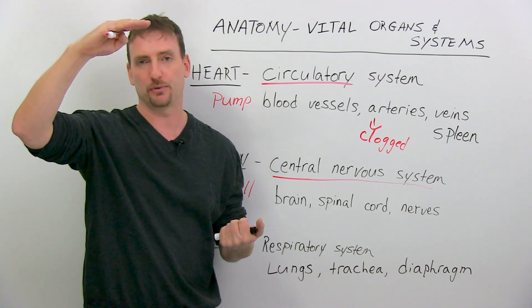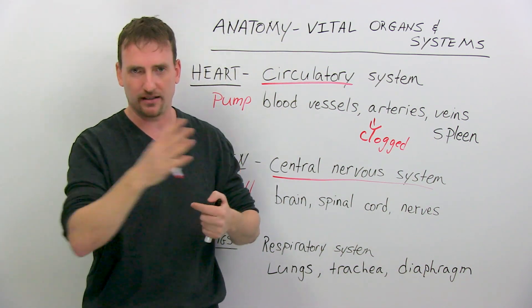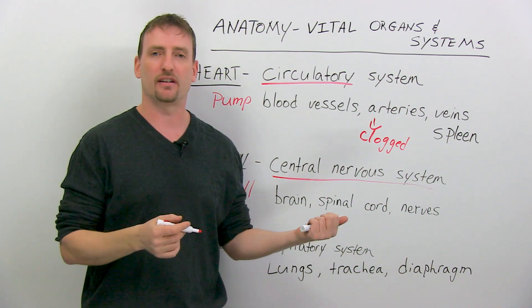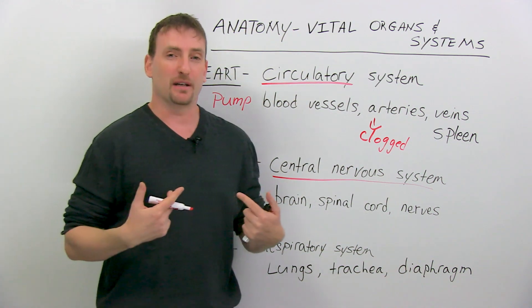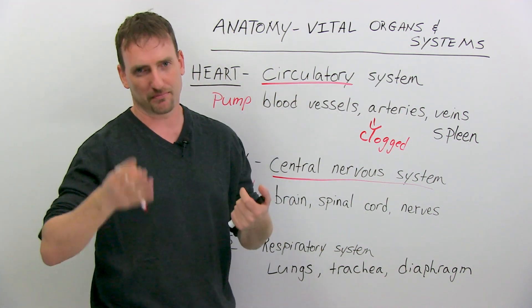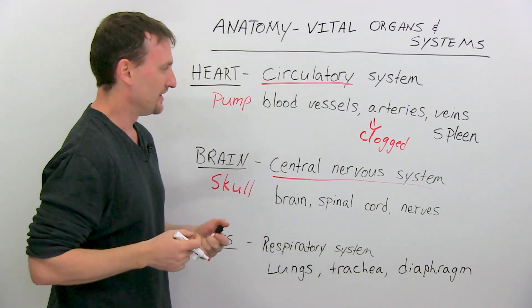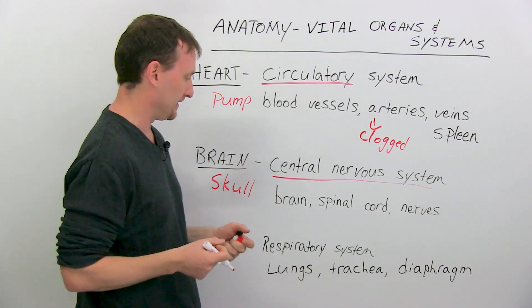So your brain controls all the voluntary and involuntary actions of your body. Voluntary - I want to lift my hand up, so I do. My brain sends a message, my hand goes up, my hand goes down, side, all around. Involuntary breathing. If I held my breath, eventually, even if I want to hold it, my brain will force my lungs to work and I will be able to breathe again. It's involuntary. I don't have much of a choice about it.